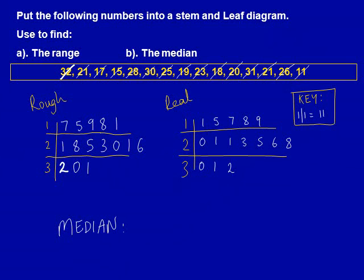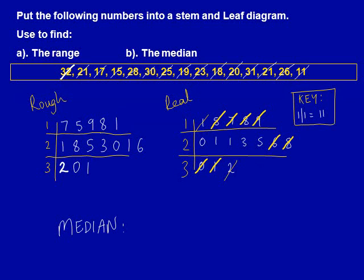We've now got four marks. To find the fifth mark, we need to find the median — this is the middle number in the diagram. To find the middle number, we begin by crossing off the first and last number on the stem and leaf diagram. We then cross off the next two numbers, and so on, until we're only left with one number. The number is 1, we circle this, and this represents 21. The median is 21.